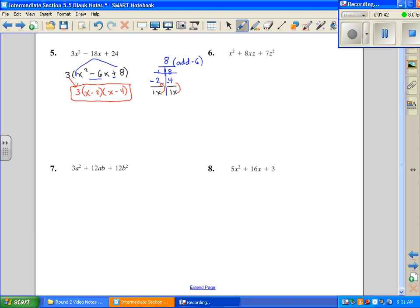And likewise in number 6, we're going to do the same process. We're looking for what multiplies, there's no GCF. Now this one looks a little bit different because there's two variables here, a z, and then there's a z squared here. There's just a minor step that we add to this procedure. We're looking for what multiplies to give us 7, and because that's a plus, it adds to give us an 8.